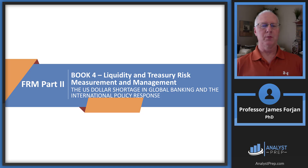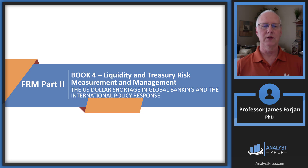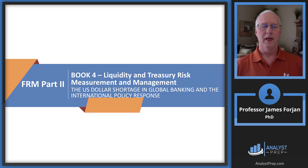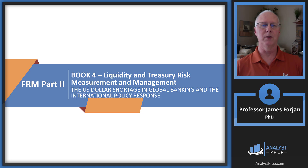This is FRM Part 2, Book 4, Liquidity and Treasury Risk Measurement and Management, covering the chapter on the US dollar shortage in global banking and the international policy response. This is a relatively short chapter — one of those working papers from the Bank for International Settlements and another well-written chapter. There are just a handful of learning objectives, but before we get to them I wanted to point something out.